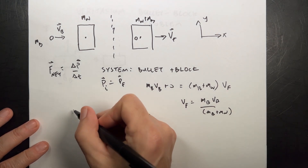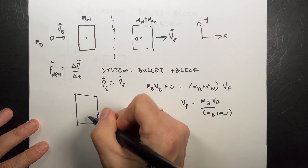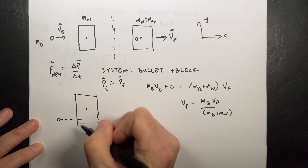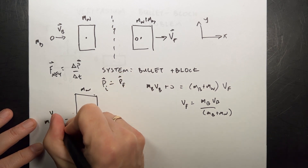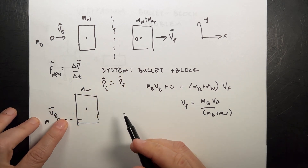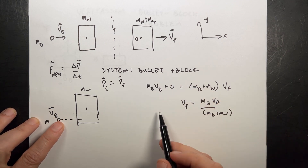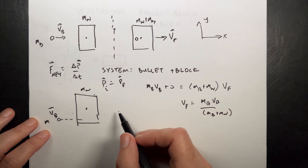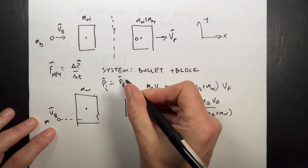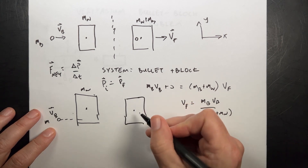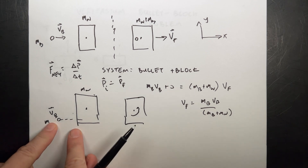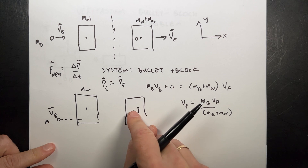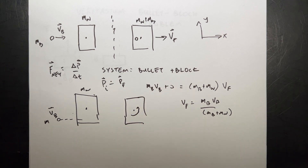Now let's look at the second block — the off-center one. It has the same bullet, same wood, same initial velocity. If I set up the momentum principle with the same system, there's no difference, because even though this block spins afterwards, the momentum principle deals with the motion of the center of mass. The momentum principle doesn't care that it spins — the same initial momentum must equal the same final momentum, so they have the same center-of-mass velocity.